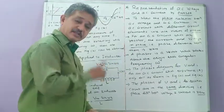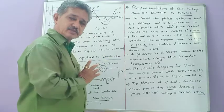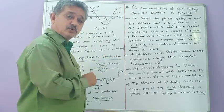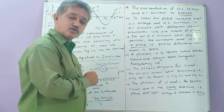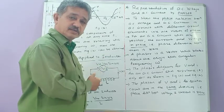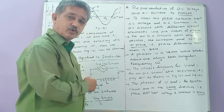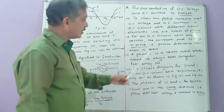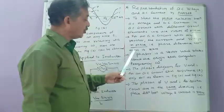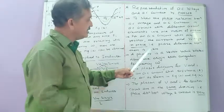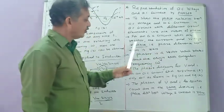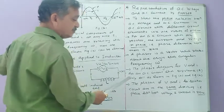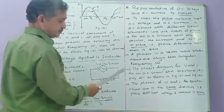If the phase of voltage at any moment is 2π, then the phase of current is also 2π; if the phase of voltage is π, then the phase of current is also π. At any moment, the phase difference between voltage and current is zero for an AC circuit with only a resistor.